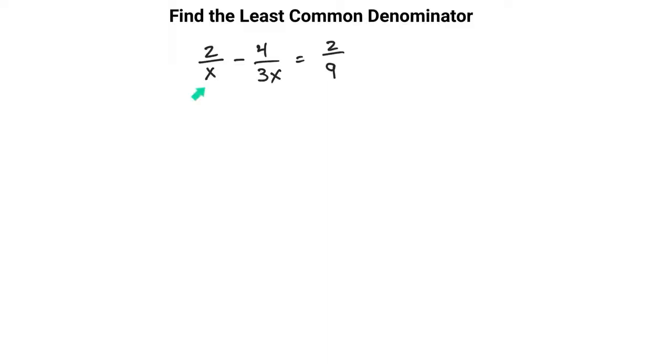Finding the common denominator of x, 3x, and 9 is important. Specifically, we want to find the least common denominator between these three. One of the most common ways that students find a least common denominator is to list out each of the multiples of those denominators.